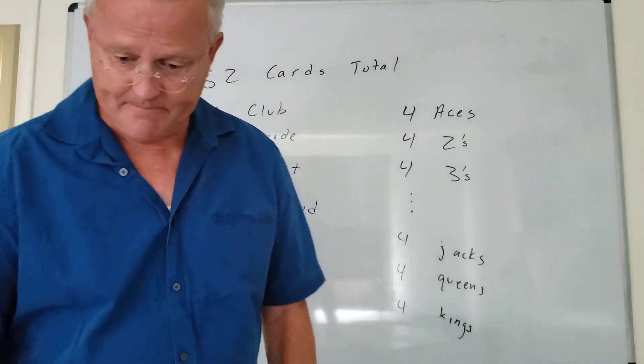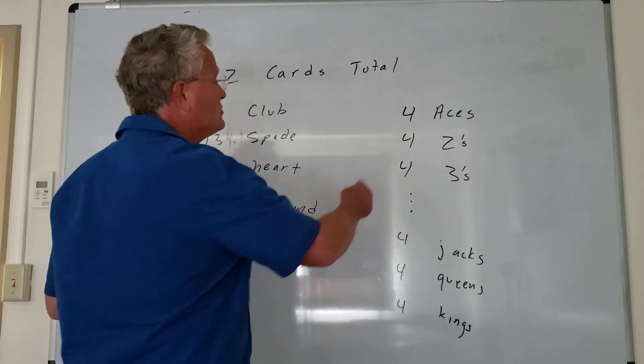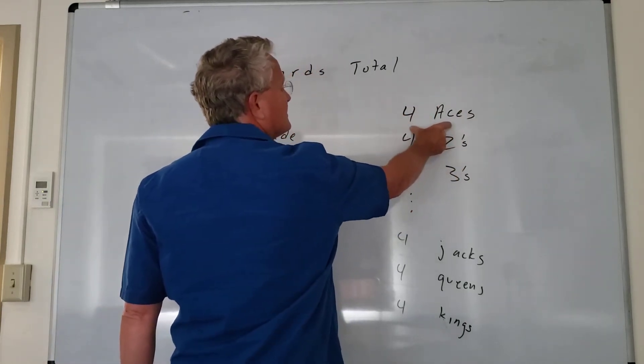So part A, we're asked what's the probability of selecting an ace? Well, the probability is the number of possible successes.